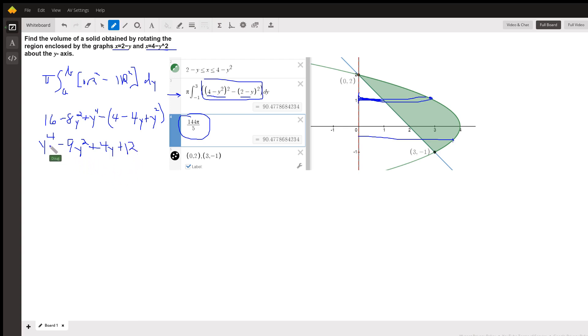At this point, we would be finding the antiderivative of that function, so we could evaluate that definite integral. So term by term, we would be raising the exponent by 1 and multiplying by the reciprocal of the new exponent, or dividing by the new exponent. So this would be y to the 5th over 5, minus 3y cubed, plus 2y squared, and plus 12y. We'd evaluate that from negative 1 to 3.